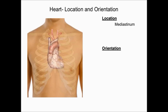The upper part of the heart where the blood vessels enter and exit is called the base. The point of the heart, or the bottom of the heart, is called the apex. The way the heart is oriented in the body is that it is tilted to the left — the apex points to the left.